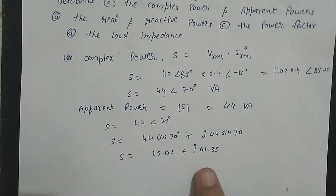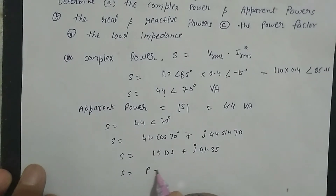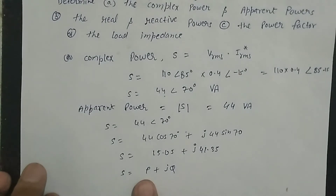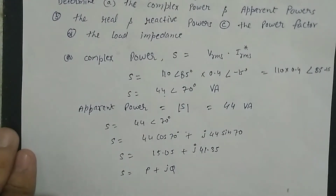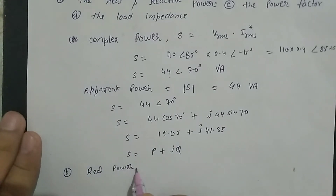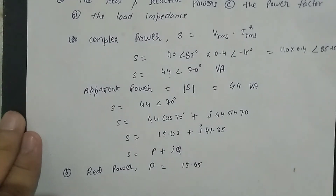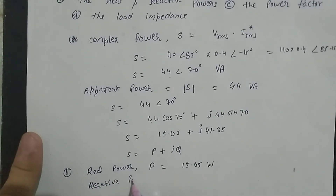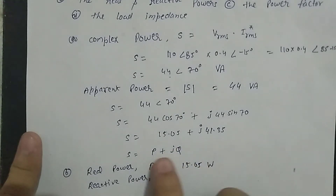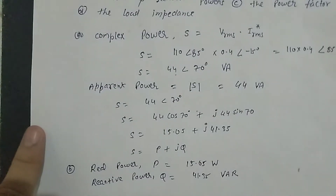तो S = 15.05 + j41.35 आ गया। S की form होती है P + jQ, जहाँ P होता है real power और Q होता है reactive power। तो real power P = 15.05 watt और reactive power Q = 41.35 volt-ampere reactive (VAR)।